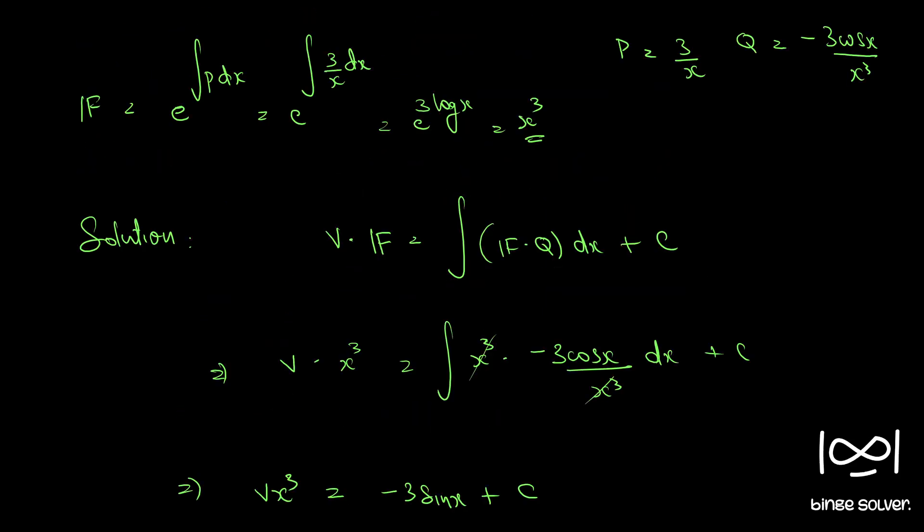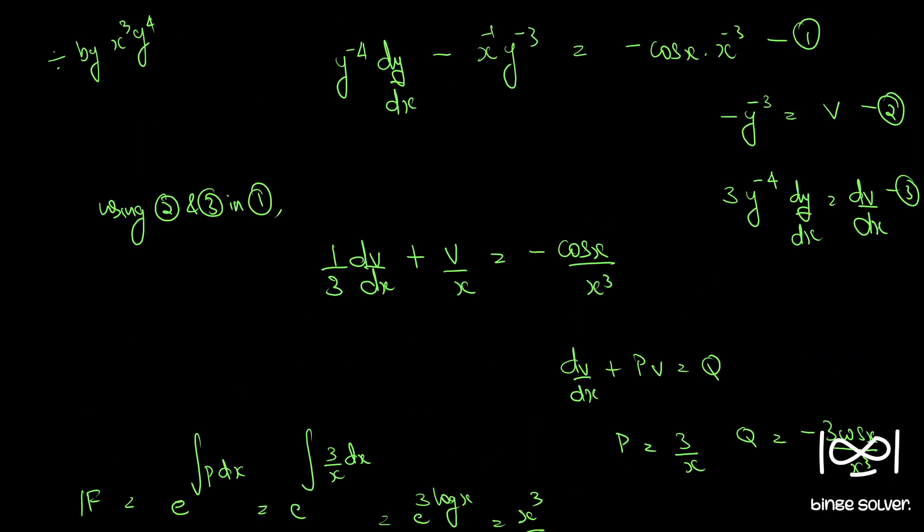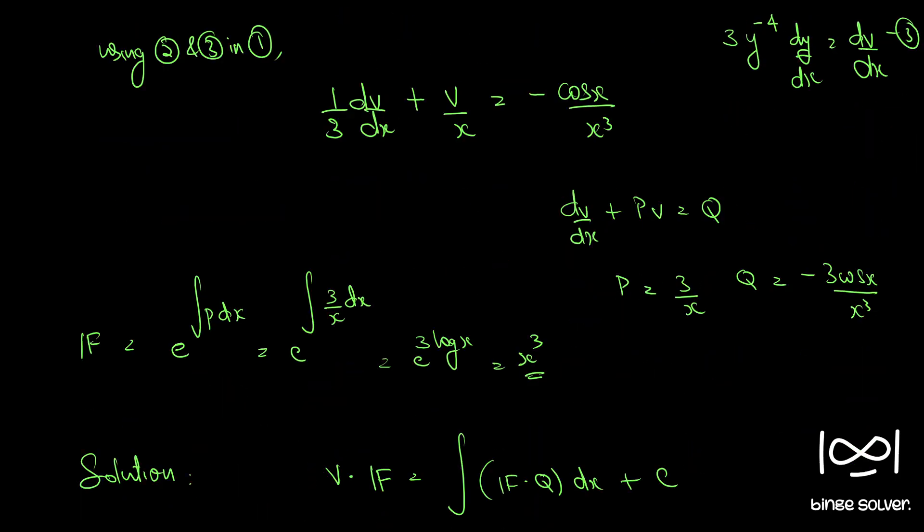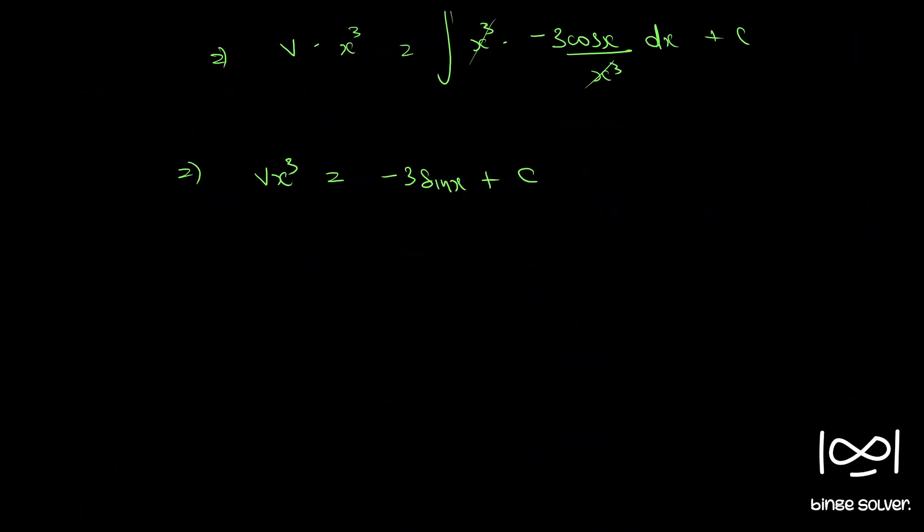Now using equation 2, we have v equal to minus 1 by y cube. So using 2, we have minus 1 by y cubed into x cubed equal to minus 3 sine x plus c.